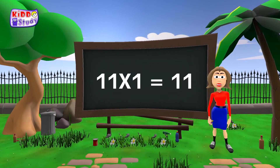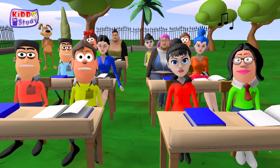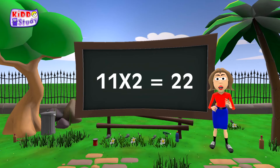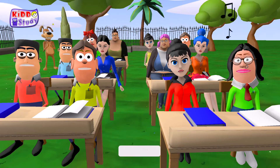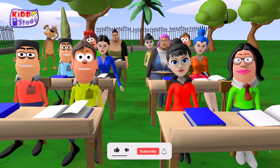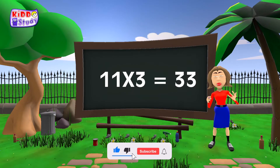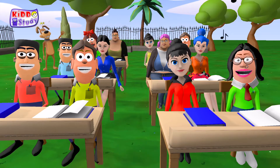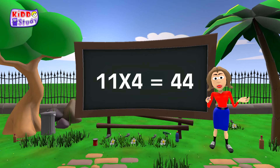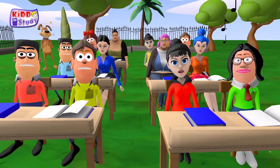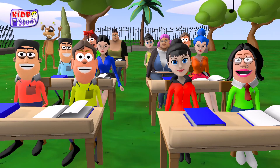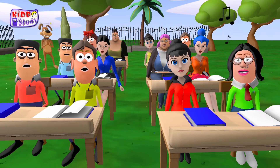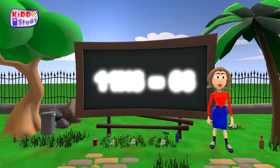11 ones are 11. 11 ones are 11. 11 twos are 22. 11 twos are 22. 11 threes are 33. 11 threes are 33. 11 fours are 44. 11 fours are 44. 11 fives are 55. 11 fives are 55.